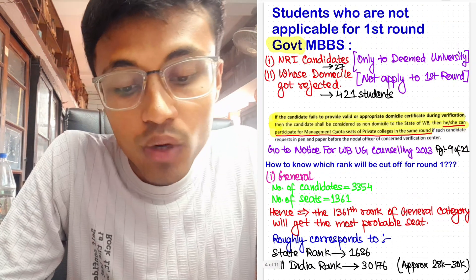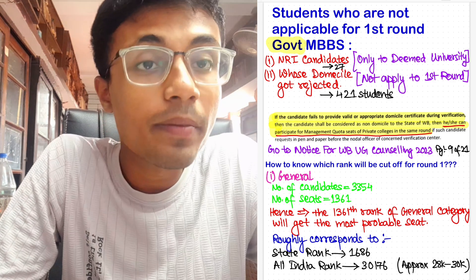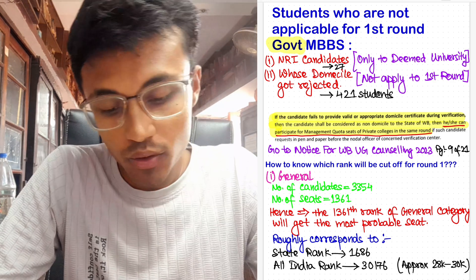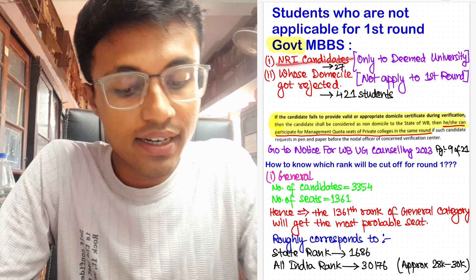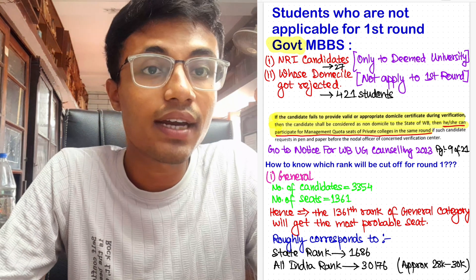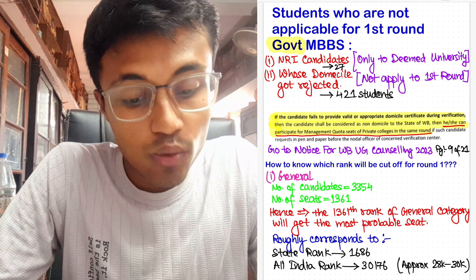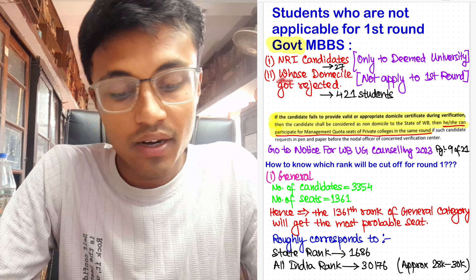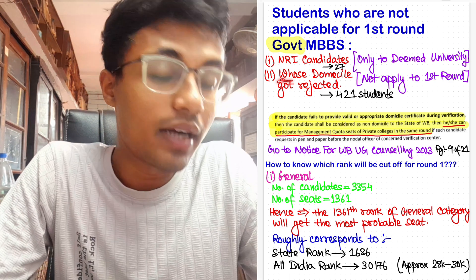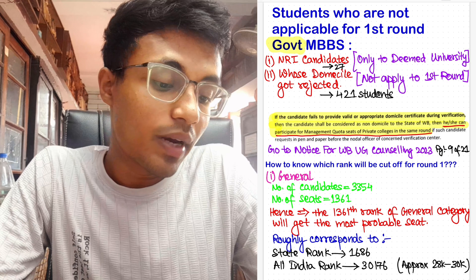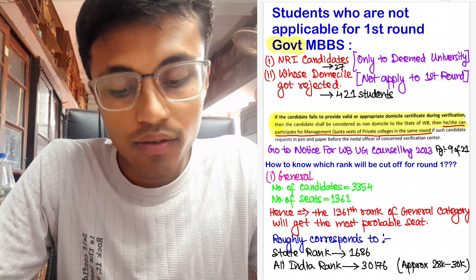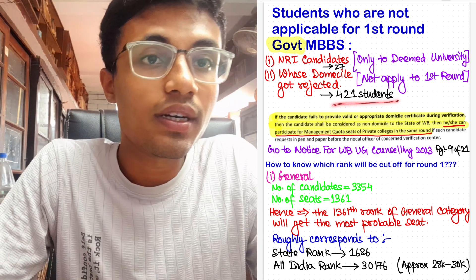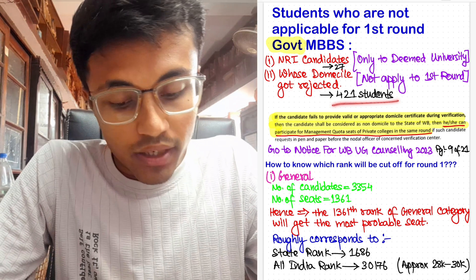Now let's see who are the students who are not applicable for first round government MBBS. I am saying it again, this video is for the government MBBS counseling and not private or semi-government or management quota. So the NRI candidates, as I said earlier, there are total 27 candidates who participated in this year's counseling and they are only limited to deemed universities or private universities. And there are some students whose domicile got rejected in this year of counseling, so they cannot apply to first round but they can apply to second round providing their domicile format required for counseling. So there are a total of 421 students whose domicile got rejected in the document verification allotted to colleges.